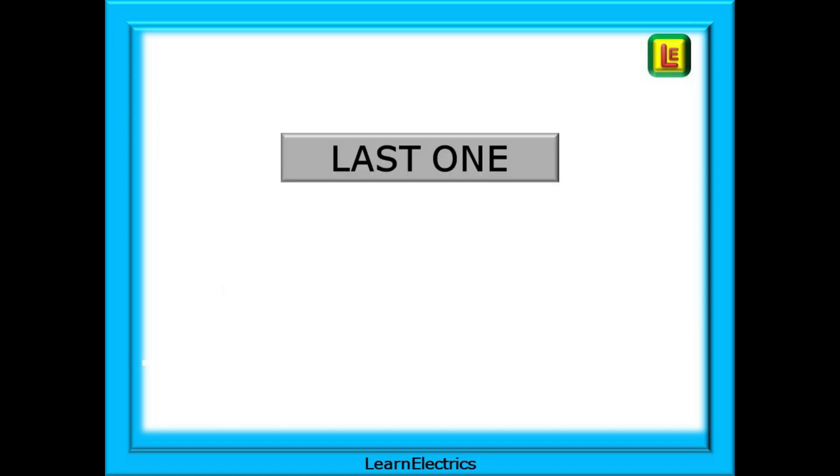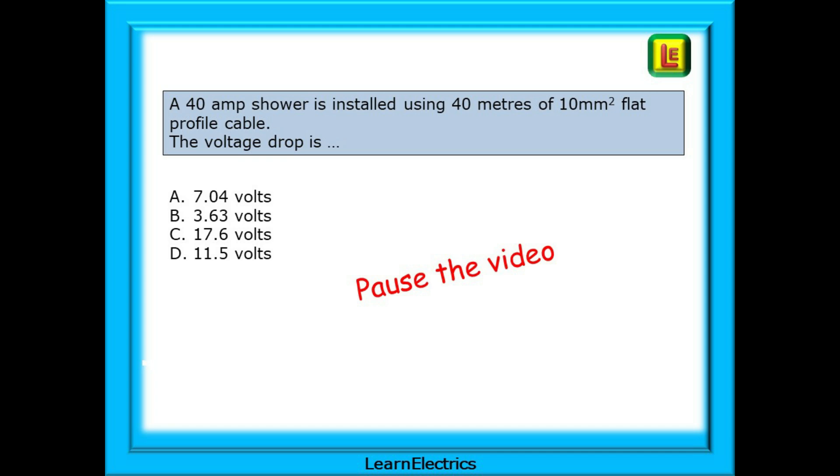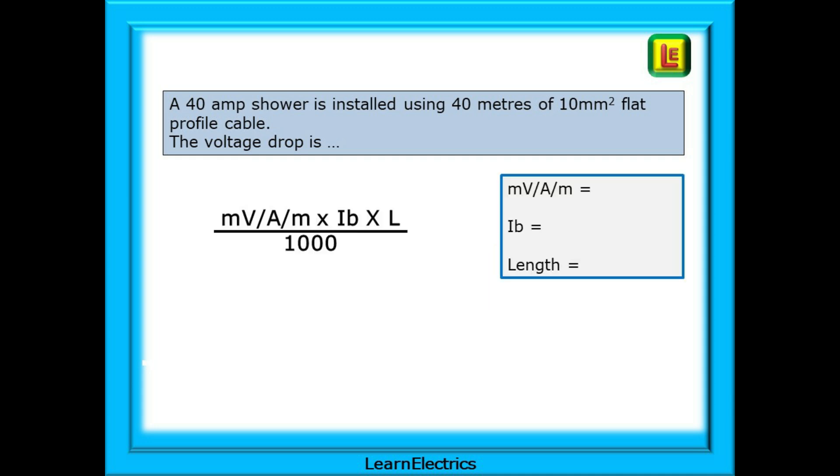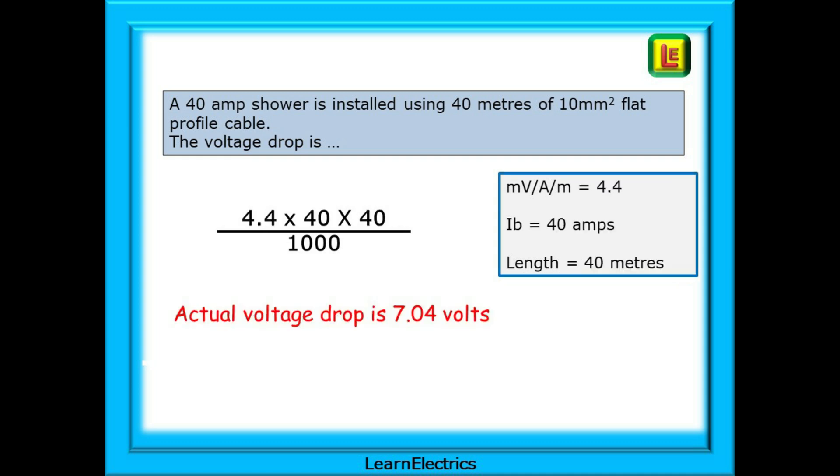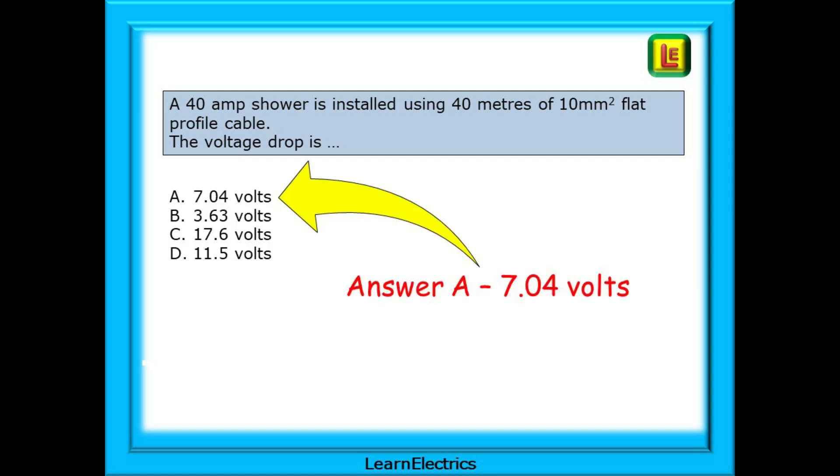And the last question for this video. A 40 amp shower is installed using 40 metres of 10 square millimetre flat profile cable. The voltage drop is 4 potential answers. Choose the correct one. Again pause the video and work through the question yourself. Here's the formula. Complete the data in the blue box. Enter the data into the formula. Make your calculation and your answer should be 7.04 volts. Now choose an answer. Your answer choice should be A.